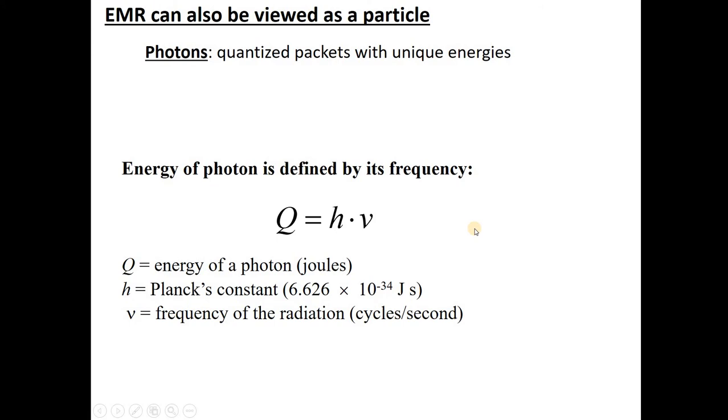Okay, so we just talked about how EMR can be a wave, but the other view is of EMR as a particle. And when we speak about electromagnetic radiation as a particle, we usually use the word photons, which we think of as being quantized packets of light with unique energies. There's a deep and awesome history of physics here that I encourage you to go back and review. But a number of observations support the idea that light is actually these quantized objects that can strike the surface.